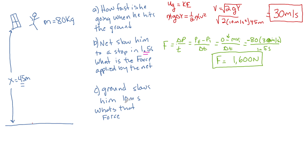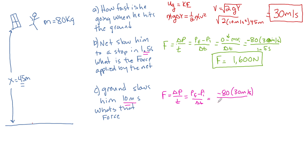For part c, we do the same thing but change the time from 1.5 seconds to 10 milliseconds. Using delta p over t with 80 kilograms times 30 meters per second divided by 10 times 10 to the minus third seconds, we see a force of 240,000 newtons.